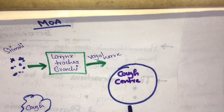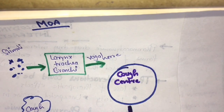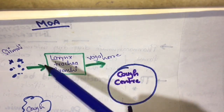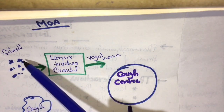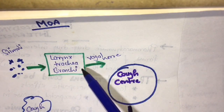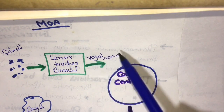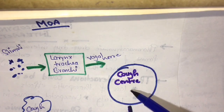The mechanism of action of antitussives: when irritants, allergens, or smoke enter the larynx, trachea, and bronchi, the vagal nerve is stimulated. The vagal nerve sends impulses to the brain — specifically to the cough center, which is present in the medulla oblongata. This excites the cough center and produces the cough reflex.